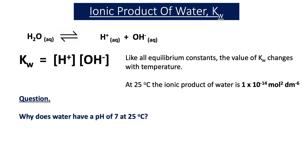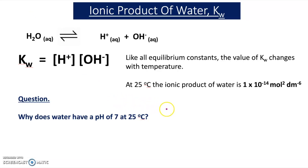The value of Kw, like all equilibrium constants, changes with temperature. At 25°C the ionic product of water, Kw, has a value of 1 × 10⁻¹⁴ mol² dm⁻⁶. This value of Kw at 25°C is the reason that water has a pH of 7 at this temperature. We're now going to show how this gives us a pH value of 7.